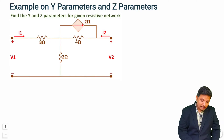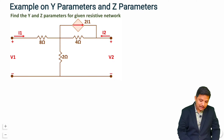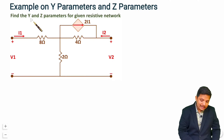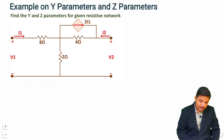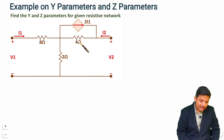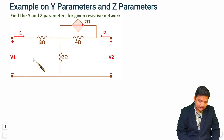We have a T-shaped network, and if we can identify the current in each resistor in terms of i1 and i2, then by solving two equations only we can solve for the Y and Z parameters. So the mindset is: can we express resistor currents in terms of i1 and i2? If so, we can directly apply KVL in each loop.